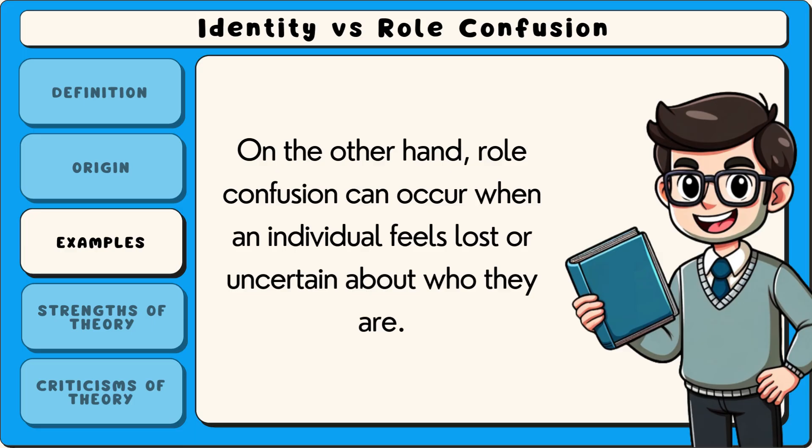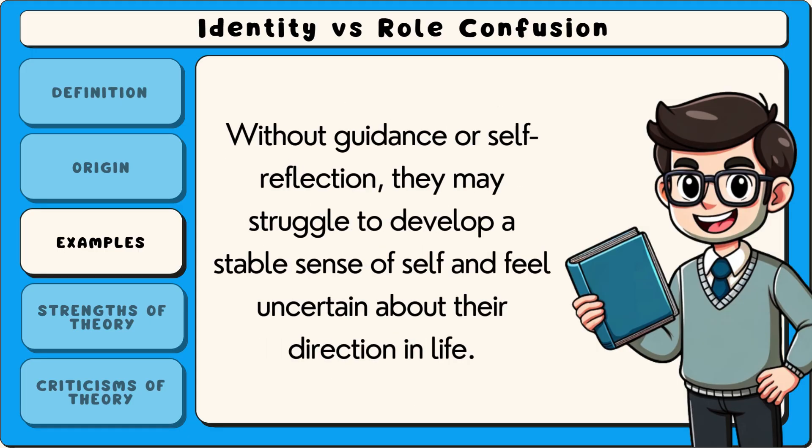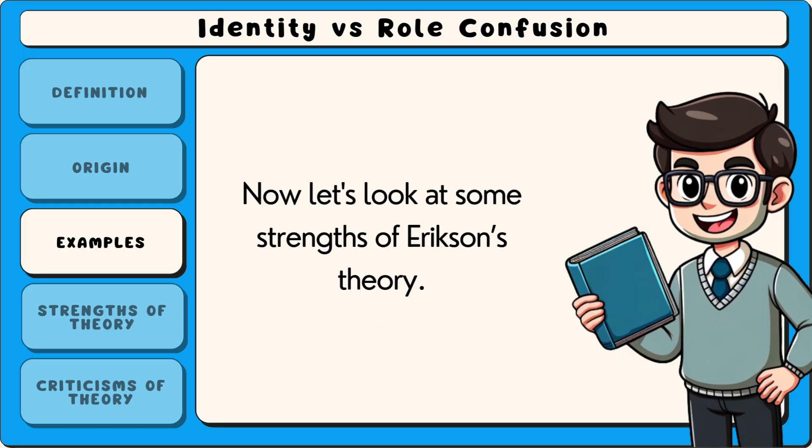On the other hand, role confusion can occur when an individual feels lost or uncertain about who they are. For example, a teenager who constantly changes friend groups, interests, or future plans without feeling truly connected to any of them may experience confusion about their identity. Without guidance or self-reflection, they may struggle to develop a stable sense of self and feel uncertain about their direction in life.